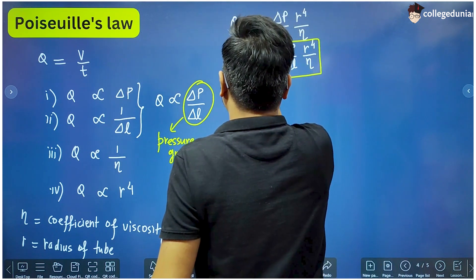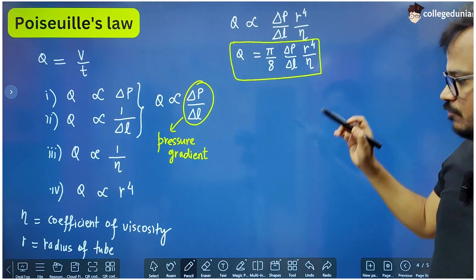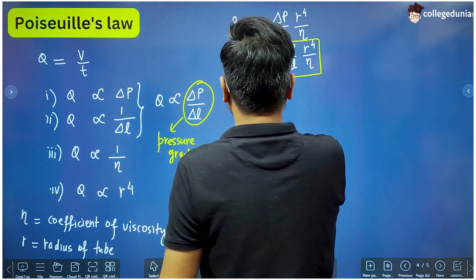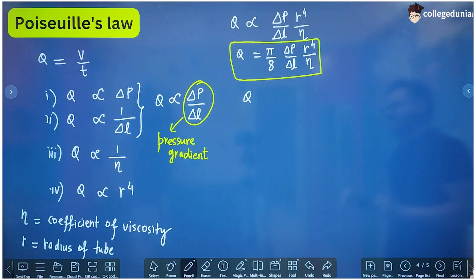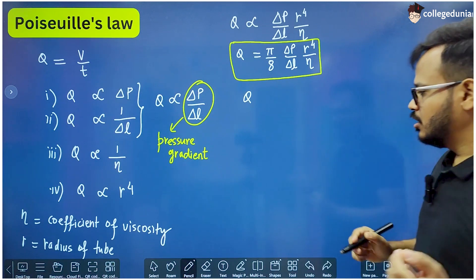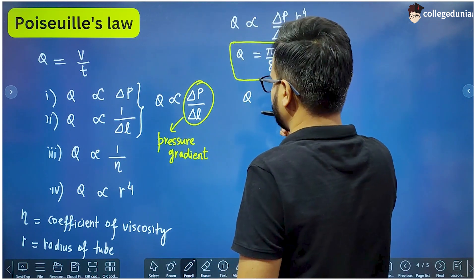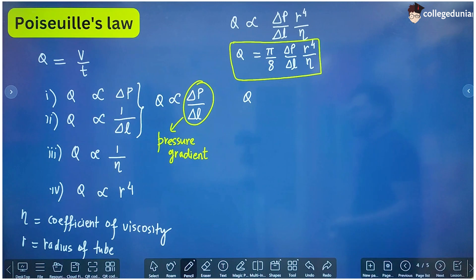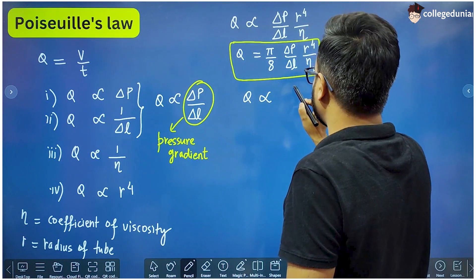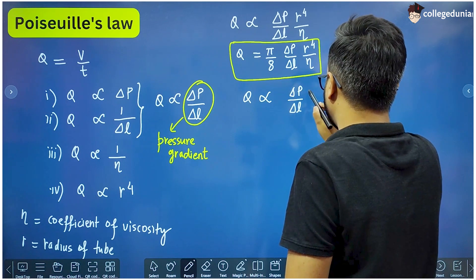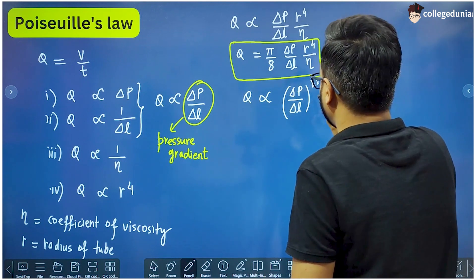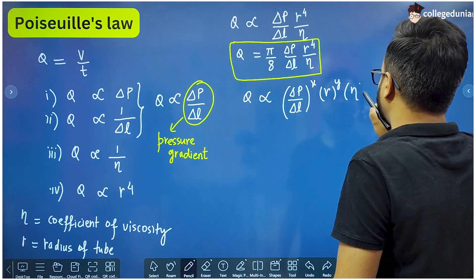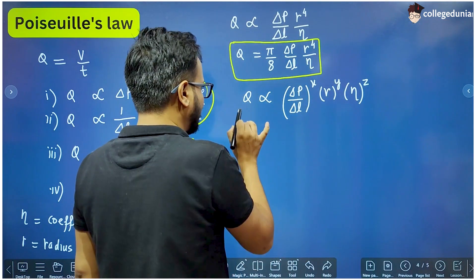The derivation of this formula also comes in exams. We will derive this formula using the method of dimensional analysis. You must revise that method from chapter 1, Units and Measurements — it is the method to derive a formula using the dimensions of the physical quantities present in the formula. Let us say that Q depends upon (delta P / delta L) to the power x, r to the power y, and eta to the power z.